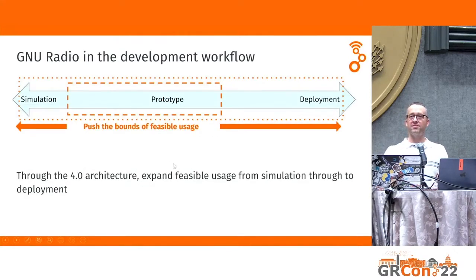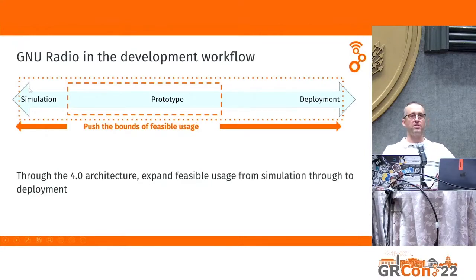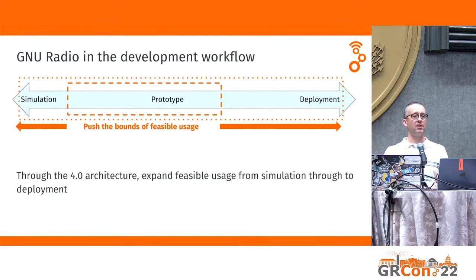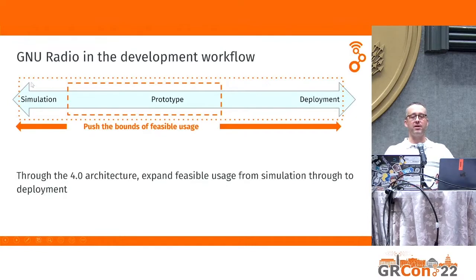We usually see GNU Radio sitting in the proof-of-concept stage — some people deploy it, some use it for early simulation, but the bulk of use cases are proof-of-concept with actual hardware and signal processing on a local machine. Through the 4.0 architecture, we hope to push the bounds of feasible usage by supporting heterogeneous architectures for more performant platforms, and by reorganizing the block library so the same signal processing can be used in more simulation-type environments.